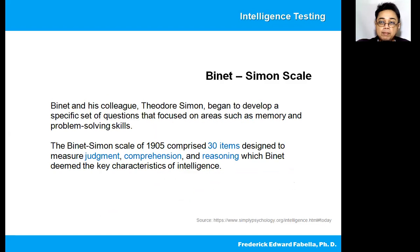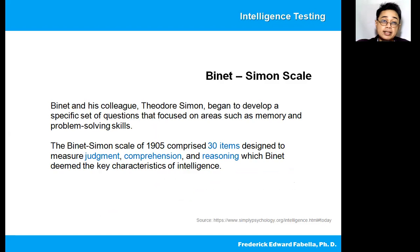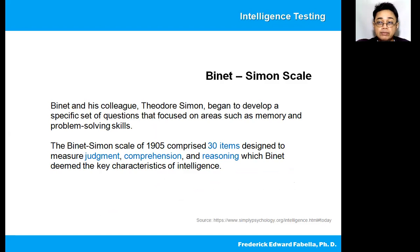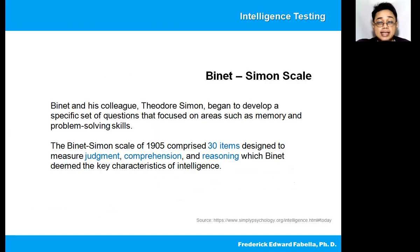Binet and his colleague Theodore Simon began to develop a specific set of questions that focused on areas such as memory and problem-solving skills. The Binet-Simon scale of 1905 comprised 30 items designed to measure judgment, comprehension, and reasoning, which Binet deemed the key characteristics of intelligence.